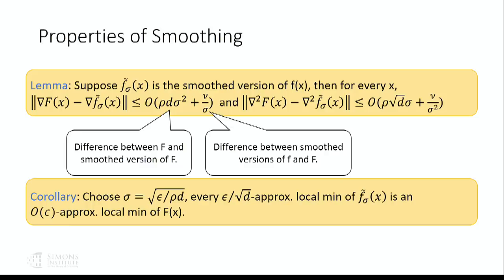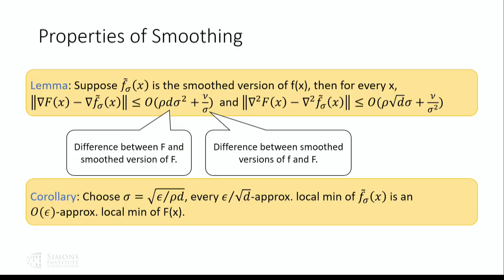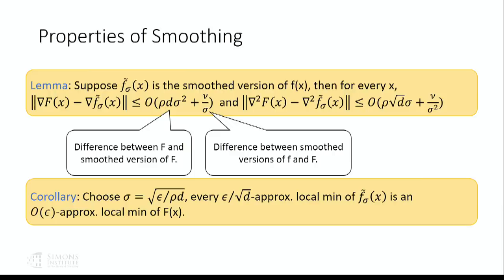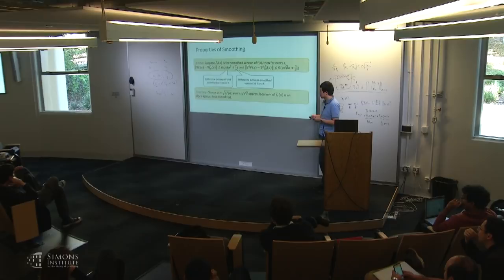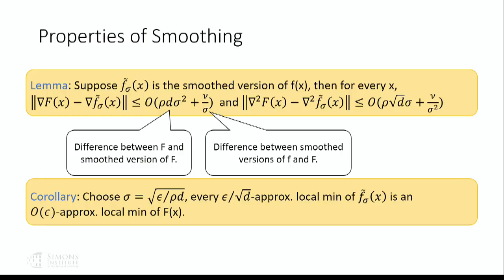Now let me briefly describe the ideas behind the lower bounds. The idea is fairly simple. Almost everything happens within a ball. Within this ball, we pick a random direction v that the algorithm does not know. We construct a function capital F such that capital F only has two local minima within this ball — one in direction v and one in direction minus v. We construct this function so that it is very flat in a band in the middle, with width log-squared d over square root d when the ball radius is 1.